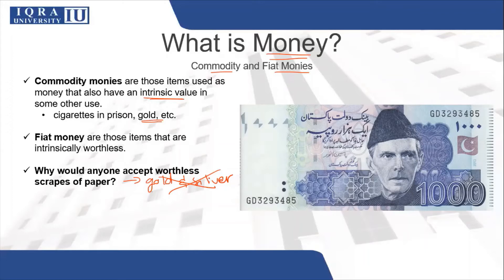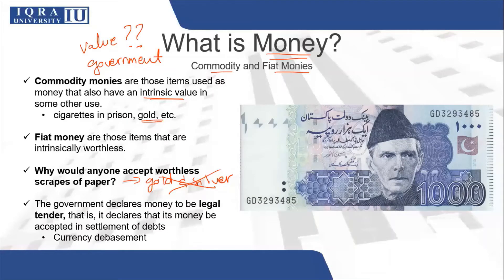So then how does fiat money have value? If nothing is backing it, how does it have enough value that everyone accepts it? The answer is that your government has taken steps to ensure that the currency will be used for trading purposes, and they have done this by declaring it as legal tender. That is, it declares that this money be accepted in settlement of debts. Because your government has declared this, money is accepted as a medium of exchange.